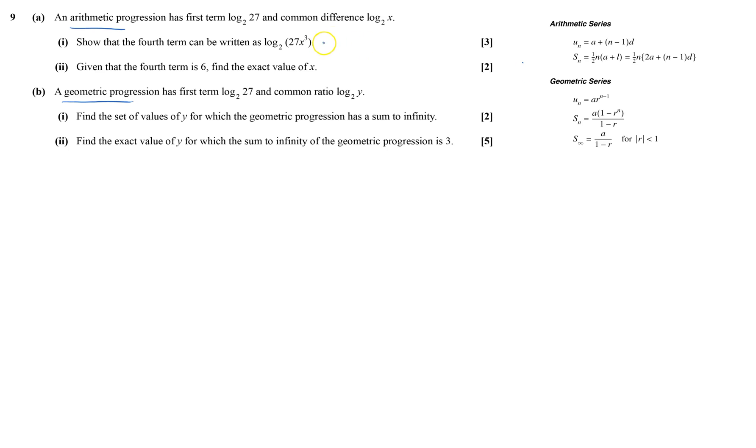The fourth term can be written as the fourth term arithmetic, like that. So fourth term is a, which is the first term, log to base 2 of 27, plus 4 minus 1, 3d, 3 times log 2x.